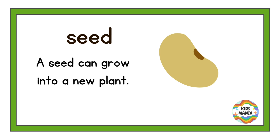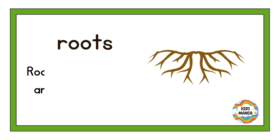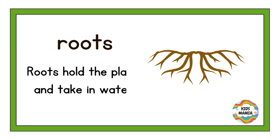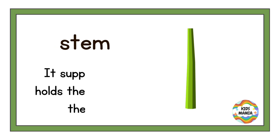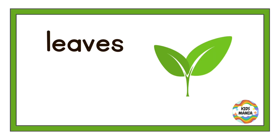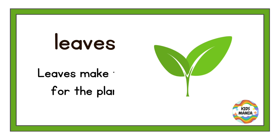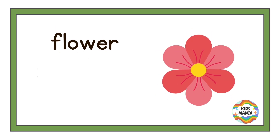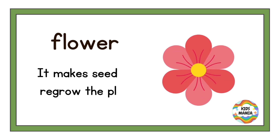Now let's learn about the plant parts in detail. A seed can grow into a new plant. Roots hold the plant and take in water. The stem supports and holds the plant. Leaves are like the kitchen of the plant — leaves make food for the plant. The flower makes seeds to regrow the plant.